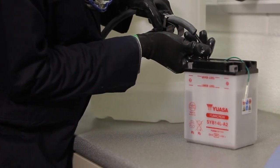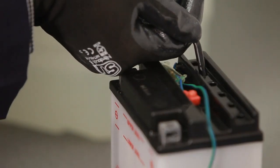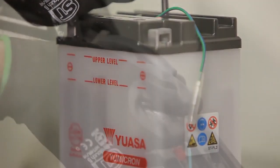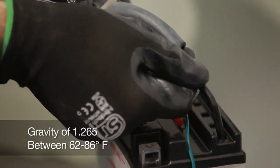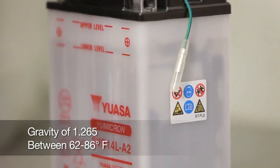Fill each cell with electrolyte to the fill level indicated on the battery case. Always wear protective eyewear and gloves when working with electrolyte. The electrolyte should have a specific gravity of 1.265 and be between 60 and 86 degrees Fahrenheit.